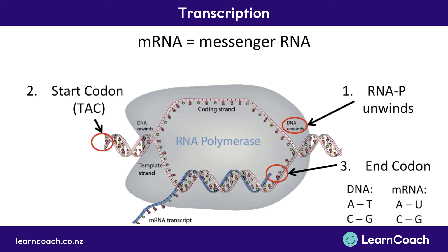In DNA, A is paired with T and C is paired with G. In mRNA, this is the same except that if there's an A on the DNA strand, instead of copying it to a complementary T, it replaces it with U, because U can be transported more easily than T. So when talking about mRNA, T is replaced with U — that's one key thing to remember.